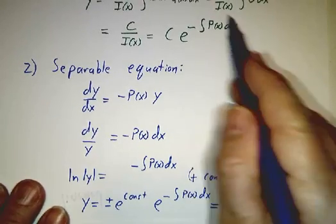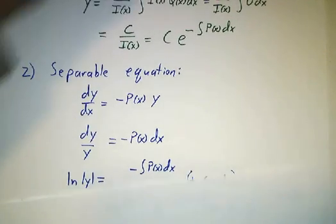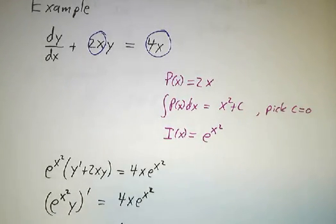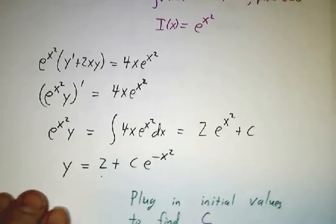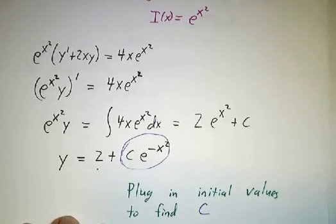And this is the solution to a homogeneous equation. And when you have an inhomogeneous equation, like this one, where you had a 4x on the right-hand side, you'll notice this part is the solution to the homogeneous equation. This part is a particular solution to this equation.